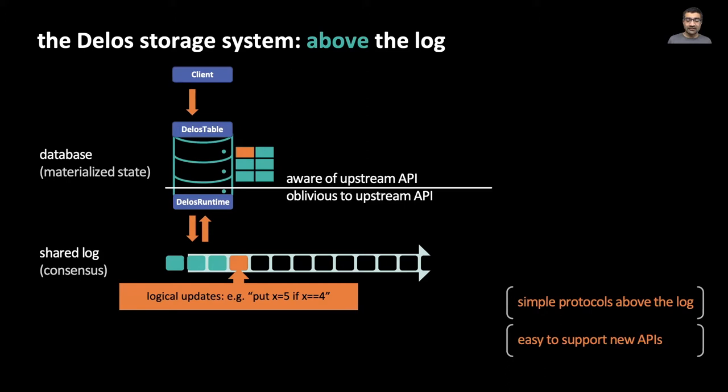There are two key points in this slide. First, the logic above the shared log is simple, consisting of appends and reads, and yet it provides linearizable consistency. Second, the bottom half of the stack, the runtime and the log, is oblivious to the table API. We can support an entirely different API, for example Zookeeper, simply by changing the top layer.